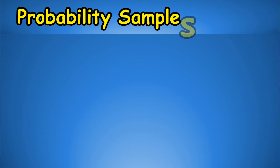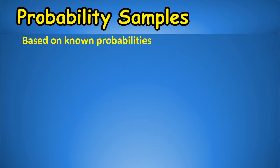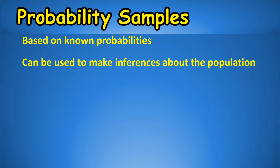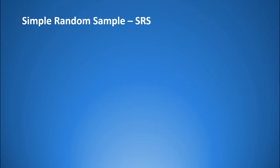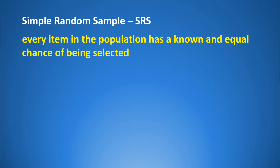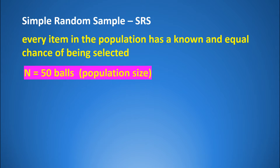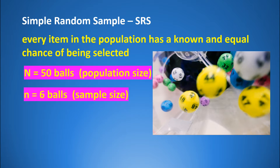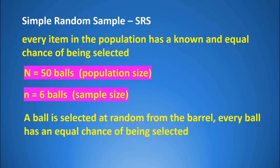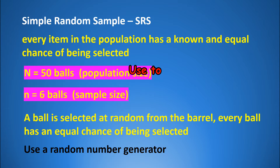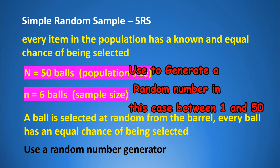Probability samples are based on known probabilities and are more rigorous than non-probability samples, and can be used to make inferences about the population. The simplest type is called a simple random sample, or SRS. In an SRS, every item in the population has the same probability of being selected. For example, with 50 balls in a barrel numbered 1 through 50 and 6 selected randomly, each ball has a 1 in 50 chance of being selected. Using a random number generator eliminates human bias.